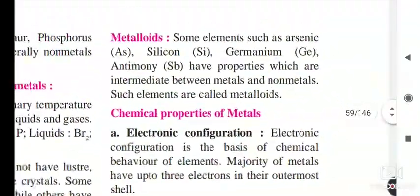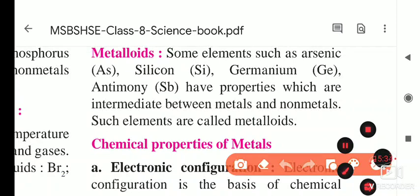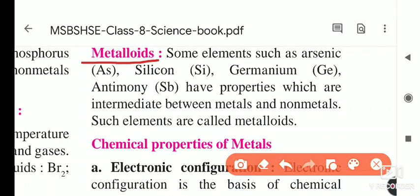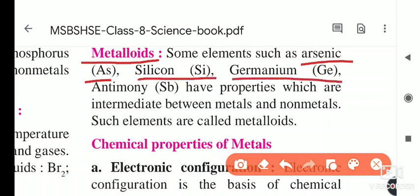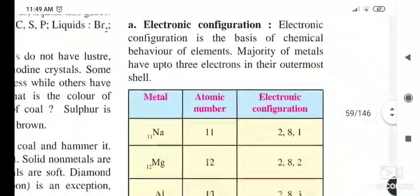Now, what are metalloids? Some elements show properties of both metals and non-metals and are called metalloids. Examples include arsenic (As), silicon (Si), germanium (Ge), and antimony (Sb). Their properties are intermediate between metals and non-metals — they show some properties of metals and some of non-metals, and that is why they are called metalloids.